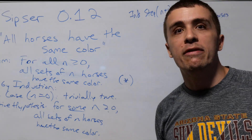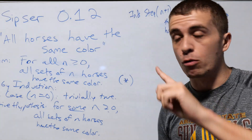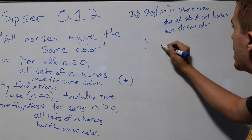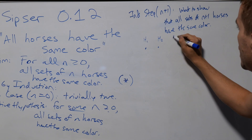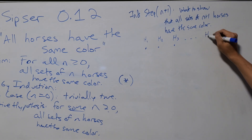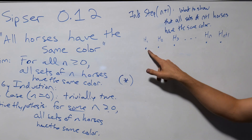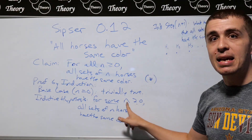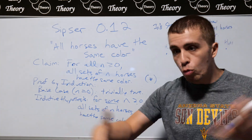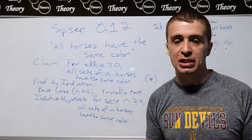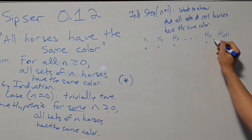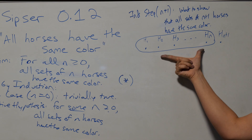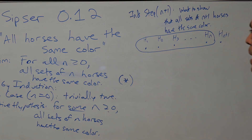I'm going to prove it via a picture — and that should give you a little warning. Let's say we have the horses h1 through h(n+1). Here's the first horse, the second horse, the third horse, and so on up to hn, then h(n+1). I'm going to represent the horses as dots. I'm going to apply the inductive hypothesis twice. It says that for some n at least 0, every set of n horses has the same color. So I look at the first n horses — by the inductive hypothesis, they must all have the same color.